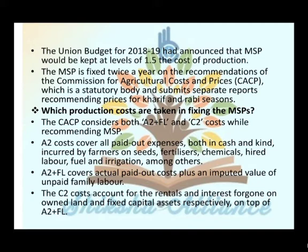The MSP is fixed twice a year on the recommendation of the Commission for Agriculture Cost and Price (CACP), which is a statutory body that submits separate reports recommending prices for kharif and rabi seasons. CACP consider karta hai dono A2+FL aur C2 cost ko jab wo recommend karta hai MSP ko.